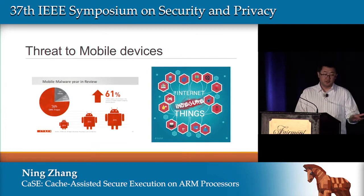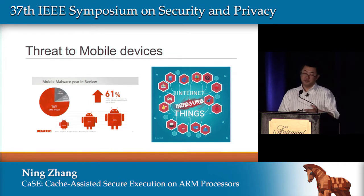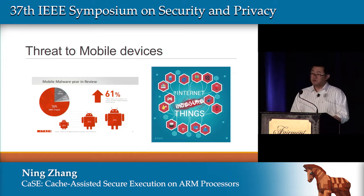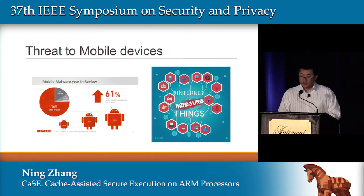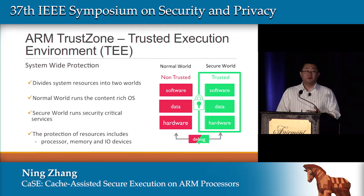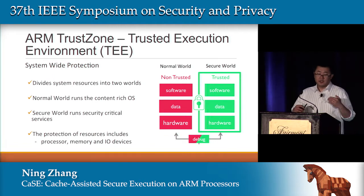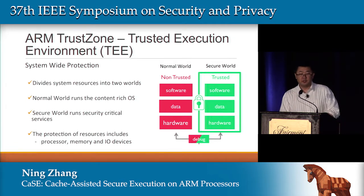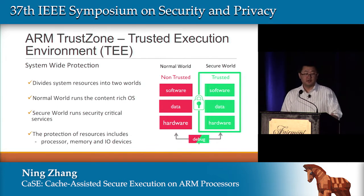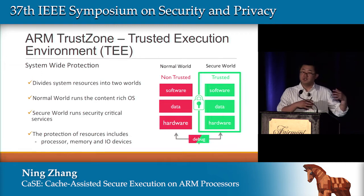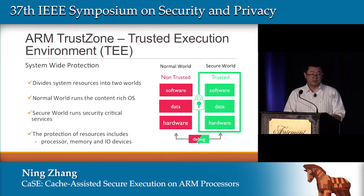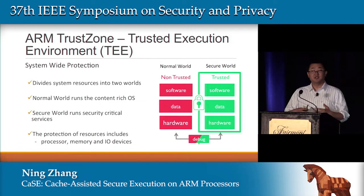Mobile malware is on the rise — this is not news for everybody. Internet of Things — many people joke about it and say it's the Internet of insecure things. With all the malware out there, some of it actually makes it to the kernel and achieves arbitrary code execution in the kernel. ARM is one of the biggest embedded processors, powering more than 60% of embedded devices. They introduced something called TrustZone, which was talked about in the previous couple of talks. TrustZone provides a system-wide protection that delivers partition between resources. The non-trusted side runs the content-rich environment — for example, running Angry Birds in the normal world — and the trusted domain runs security services such as AES encryption.